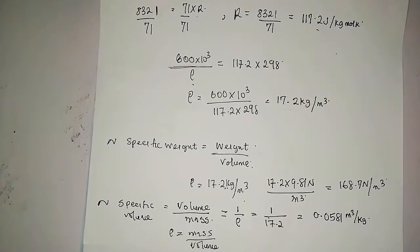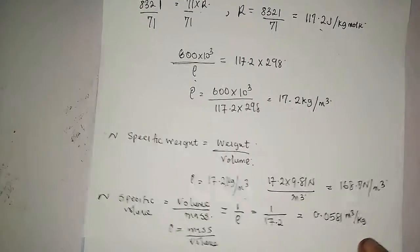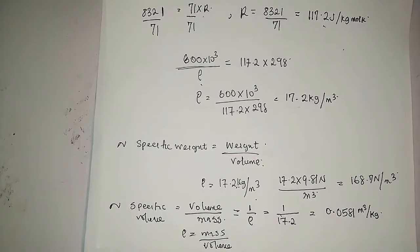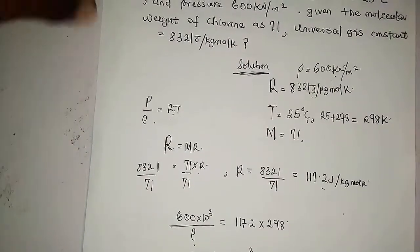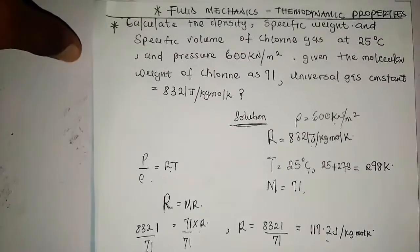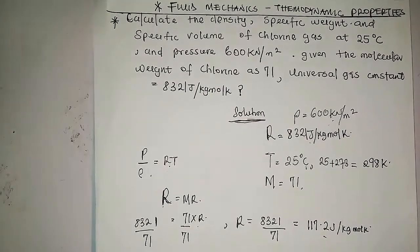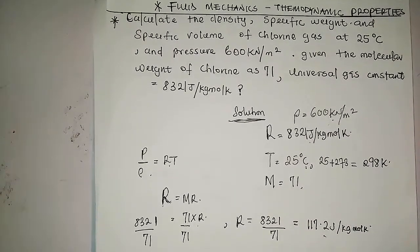That is the formula and method for calculating the specific volume of chlorine gas given in the question. That is how to calculate the density, specific weight, and specific volume of chlorine gas at the given temperature and pressure. Thank you for watching and please subscribe!